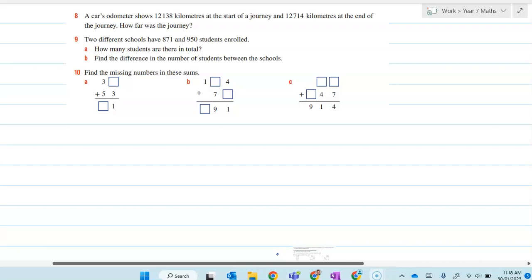Let's have a look at some slightly worded problems and see how we're going to work them out. Question 8. A car's odometer shows 12,138 kilometers at the start of a journey and 12,714 at the end. How far was the journey?